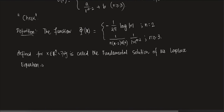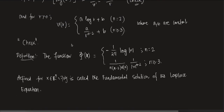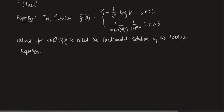This function phi(x) is called the fundamental solution of the Laplace equation. We are taking B = 0 and A = −1/(2π). There are reasons for this normalization, which will be clear later. Both expressions are radial functions.